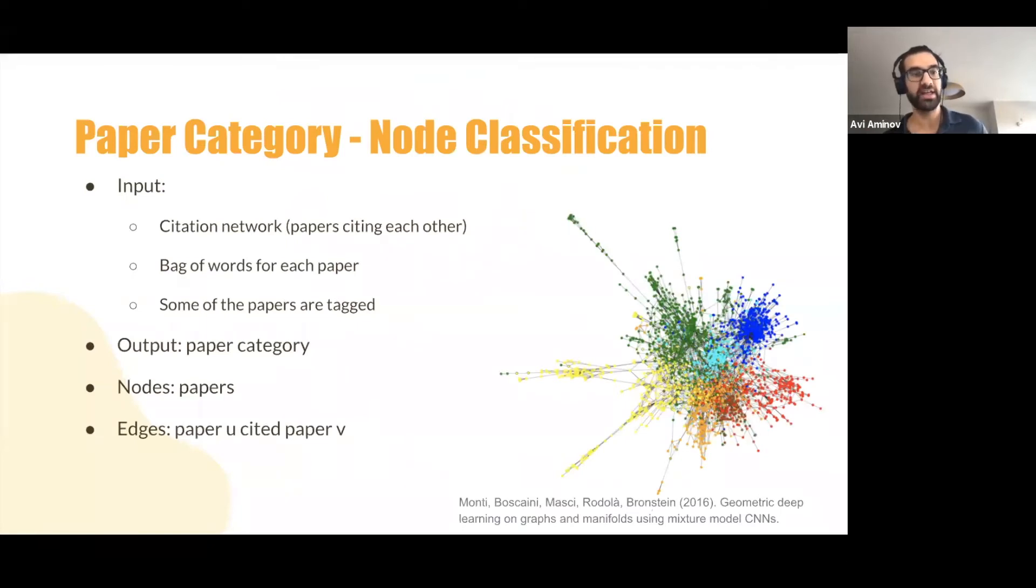So let's look at some examples, just to please the eye. The first one, how to categorize papers. This work done back in 2016. And here we are given, the problem is given a citation network, a list of papers citing each other. And we have a bag of words for each paper representing the common words in that paper. Some of the papers are tagged with their specific category. And our mission is to find the paper categories for all the papers in the dataset. So if we want to present that as a graph, we would say, we would represent papers as nodes, and the edges would be the citations. So there will be an edge between node U and node V, if paper U cited paper V. And this is using graphs. This is a very nice visualization of it. The different colors are, of course, different categorizations.